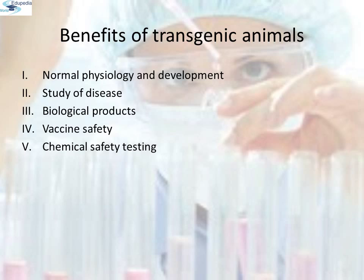Study of disease: many transgenic animals are designed to increase our understanding of how genes contribute to the development of disease. These are specially made to serve as models of human diseases so that investigation of new treatments is made possible. Biological products: medicines required to treat certain human diseases can contain biological products, but such products are often expensive to make. Vaccine safety: transgenic mice are being developed for use in testing the safety of vaccines before they are used on humans. Chemical safety testing, also known as toxicity testing: transgenic animals are made that carry genes which make them more sensitive to toxic substances than non-transgenic animals, and they are then exposed to toxic substances so that the effects are studied.